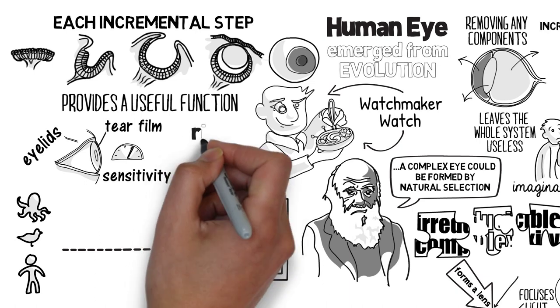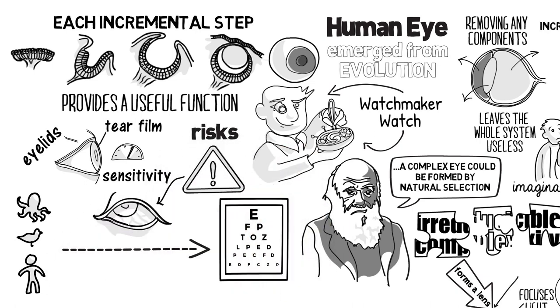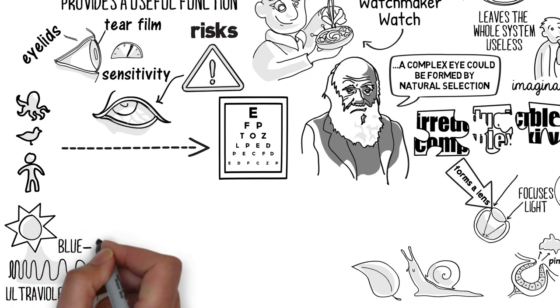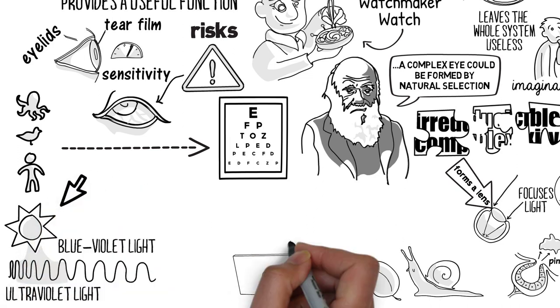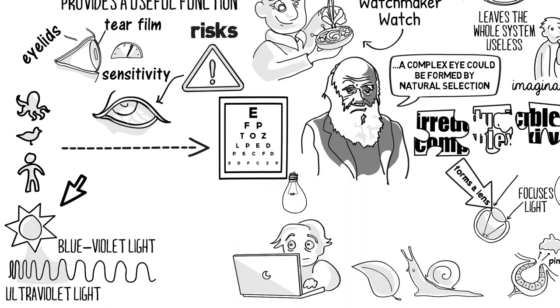Technological advances have brought about risks that our eyes are not adapted to provide adequate protection against. Overexposure to ultraviolet light already affects the sight of millions of people worldwide. And the combination of blue violet light from the sun and from computer screens and from low energy light bulbs could increasingly lead to the premature aging of our eyes.